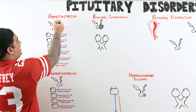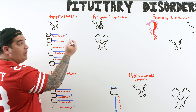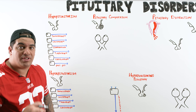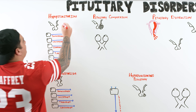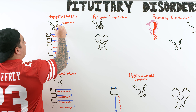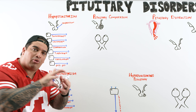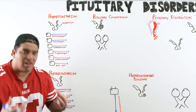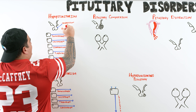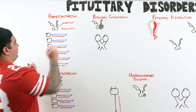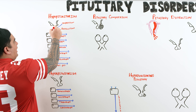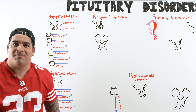Looking at a basic diagram, we have the hypothalamus, the mammillary bodies, the pituitary stalk or infundibulum, and the posterior and anterior pituitary. In hypopituitarism, there are two main problems: compression of the pituitary, which reduces blood flow and hormone production, or direct destruction of the pituitary tissue, which similarly causes a loss of hormone production.